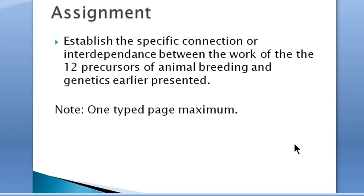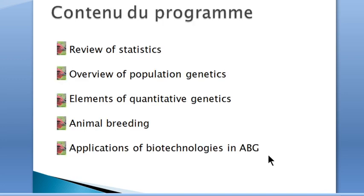At this point, I'm going to assign you to establish the specific connection or interdependence between the work of the 12 precursors of animal breeding and genetics earlier presented. Please note: you shouldn't write more than one typed page — one typed page is the maximum.